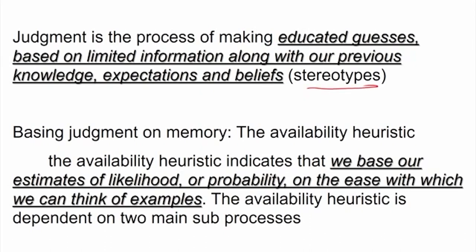Stereotyping is making some kind of prediction or labeling people by a certain category or characteristic — for example, 'educated people are more nerdy,' 'women are poor in mathematics, men are very good in mathematics,' and so on. Stereotyping is classifying people based on certain labels or characteristics, and that is what judgment is all about. Given whatever knowledge, information, experience, and beliefs we have, we merge them together and make a statement — that is called judgment.